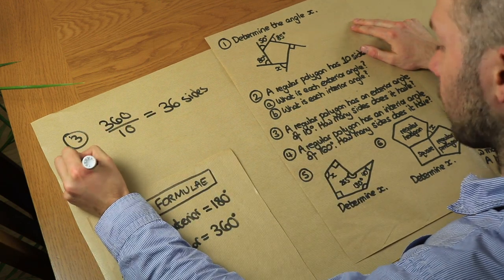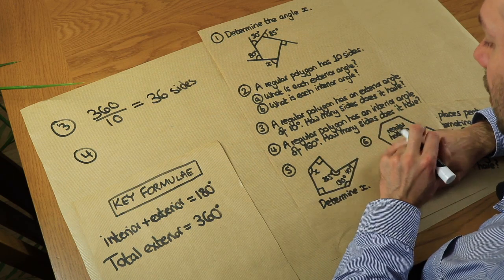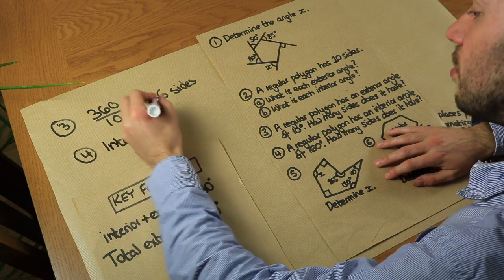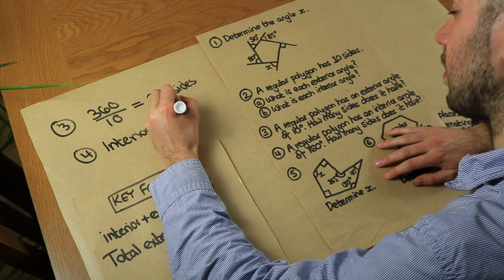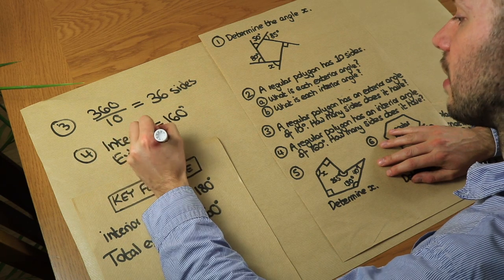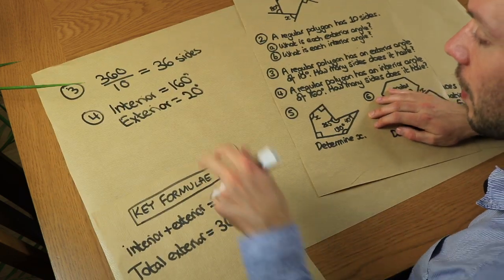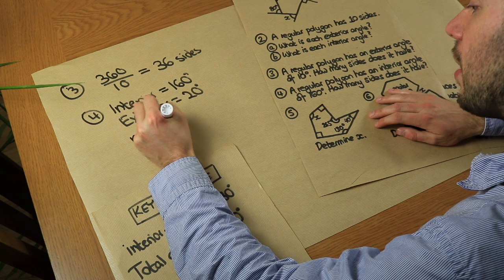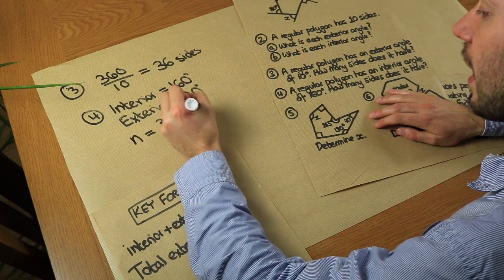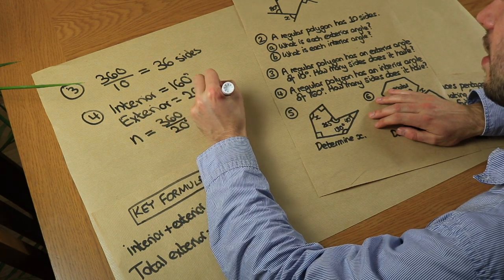Question 4: A regular polygon has an interior angle of 160 degrees. How many sides does it have? If each interior angle is 160°, then each exterior angle is 180 − 160 = 20 degrees. To find the number of sides n, we do 360 ÷ 20 = 18. It must have 18 sides.